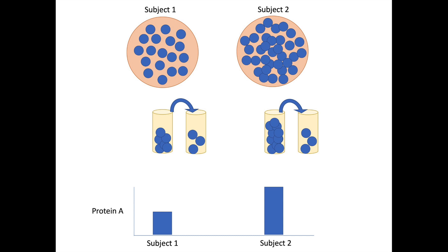After doing that dilution, I'm ready to measure protein A. And once the samples have been properly diluted, it may turn out that subject 2 actually has less of protein A. So let's get to it!